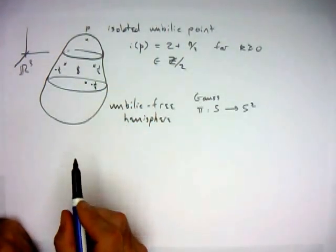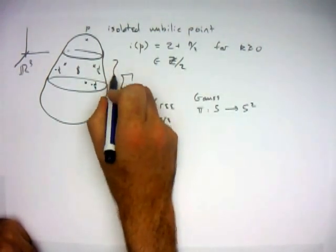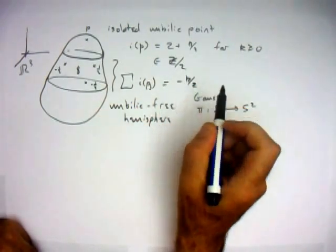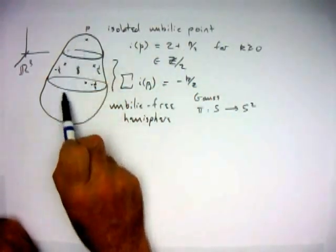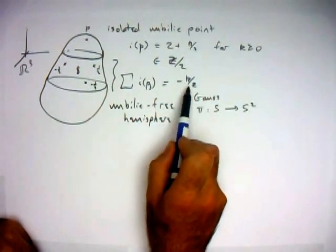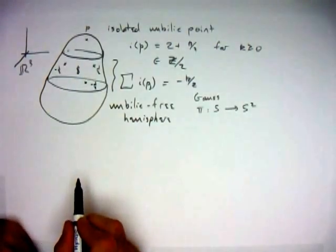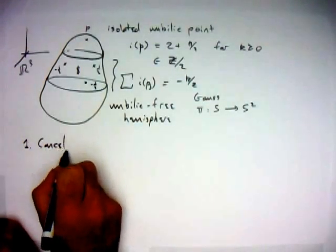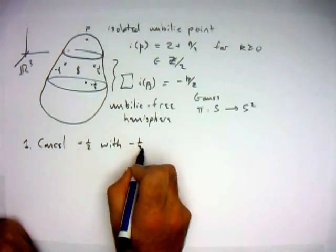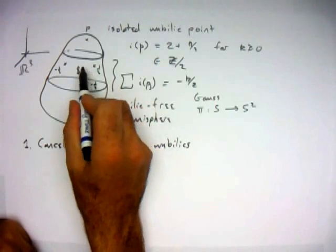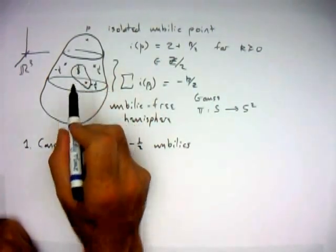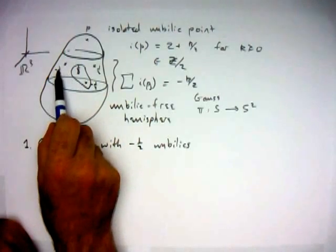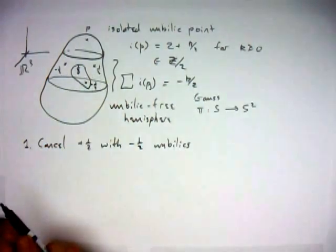We don't know the exact distribution of the plus and minus 1/2 umbilics, but one thing we do know is that the sum of their indices must be minus k over 2. The reason is that they must add together with the original umbilic — there are no umbilic points on the hemisphere — and the sum of all umbilic indices must be 2, so this part must contribute minus k over 2. Given such an object, we then cancel the plus 1/2 with minus 1/2 umbilics. By a small perturbation we bring them close together and cancel them down to zero, leaving just k minus 1/2 umbilics that add up to minus k over 2.